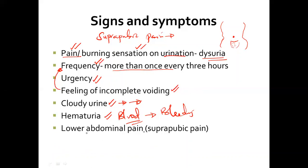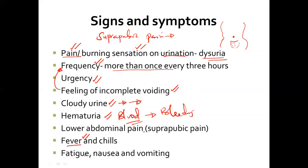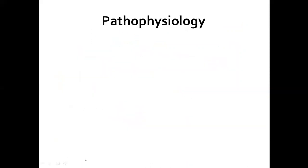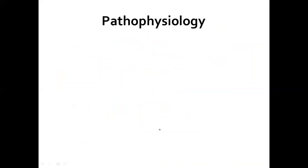We might also have low abdominal pain, which is the suprapubic pain we discussed, as well as fever and chills because it's an infection. Then other systemic problems may include fatigue, nausea, and vomiting — mostly because of the buildup of waste products, since once you have cystitis the urinary tract no longer works very efficiently.